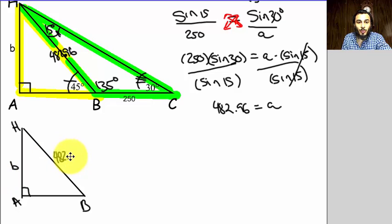The hypotenuse is 482.96, and we know that this angle here measures 45 degrees. What I could do to find—and again, right, that's just the same triangle, the same right triangle drawn separately—what I could do to find the missing side B...